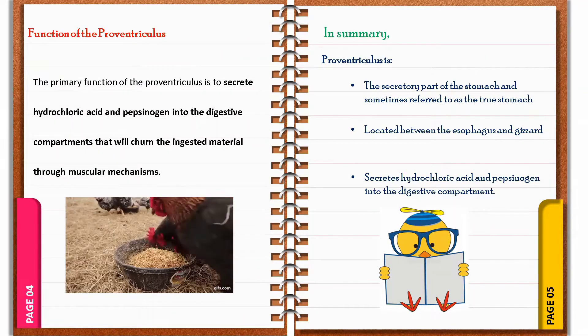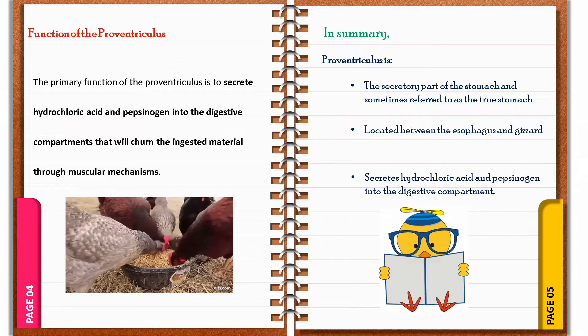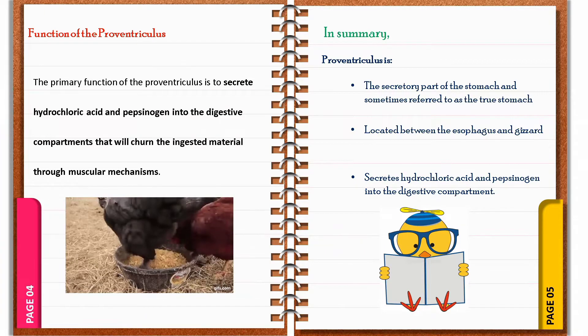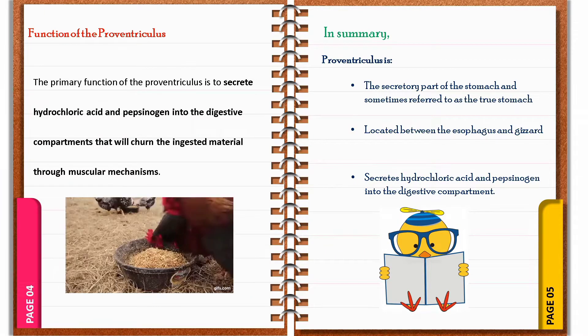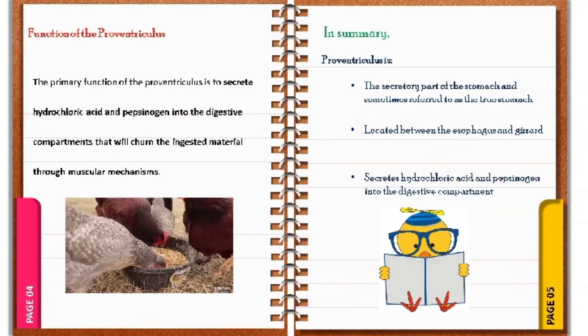For the function of the Proventriculus, the primary function is to secrete hydrochloric acid and pepsinogen into the digestive compartments that will churn the ingested material through muscular mechanisms.